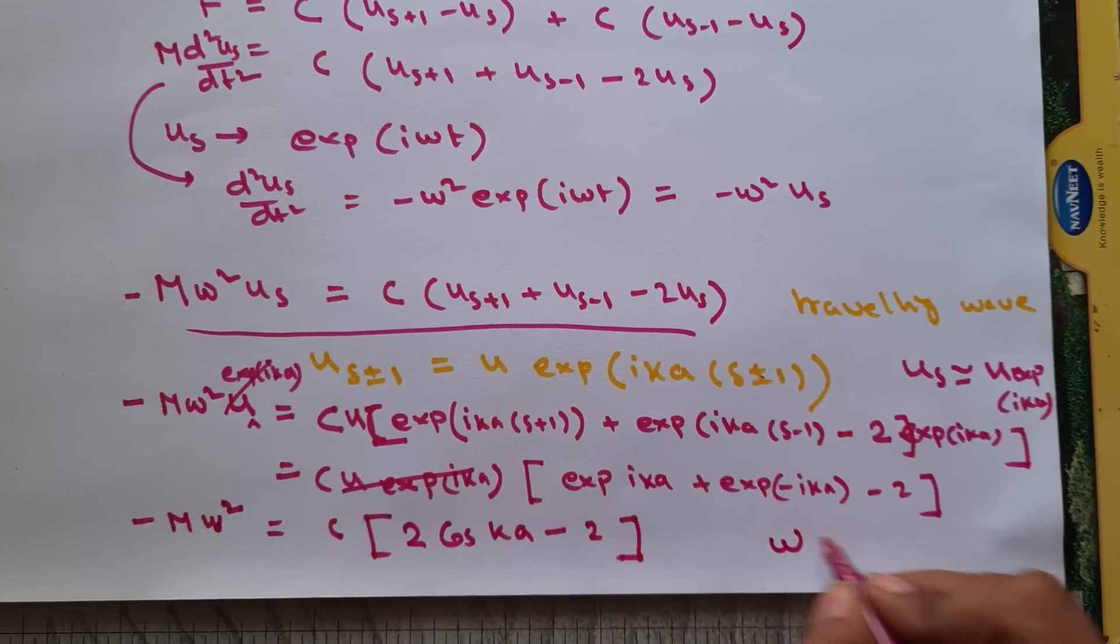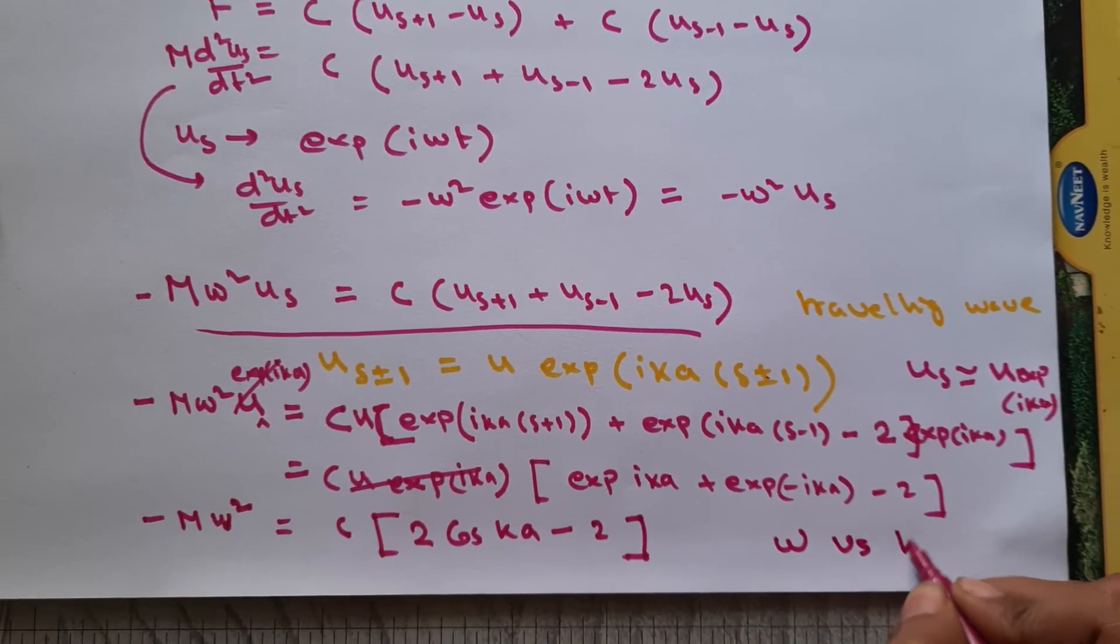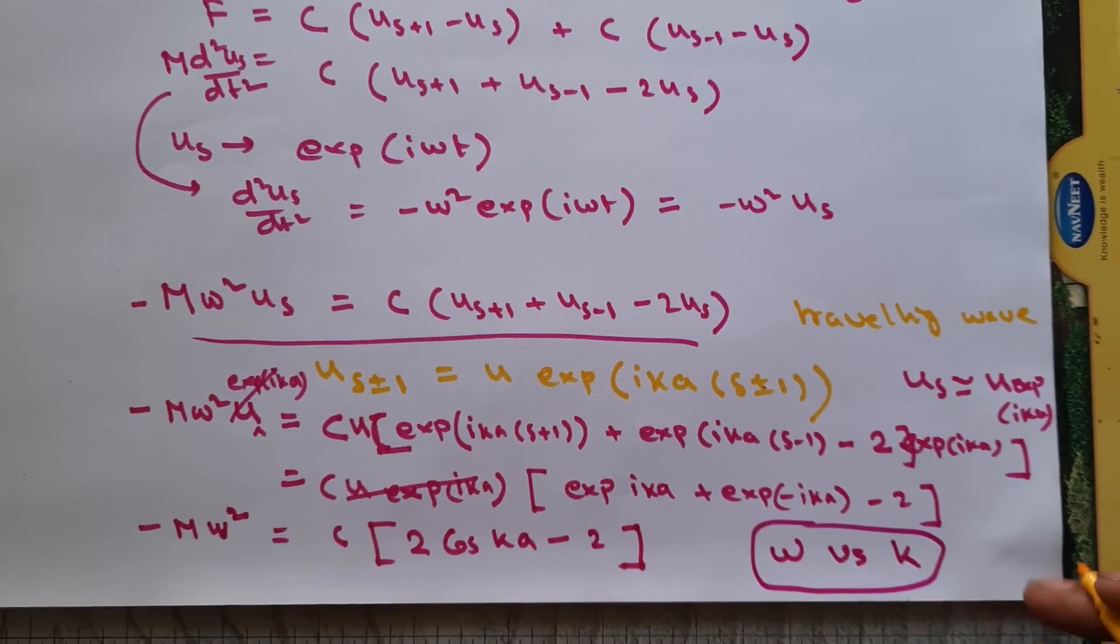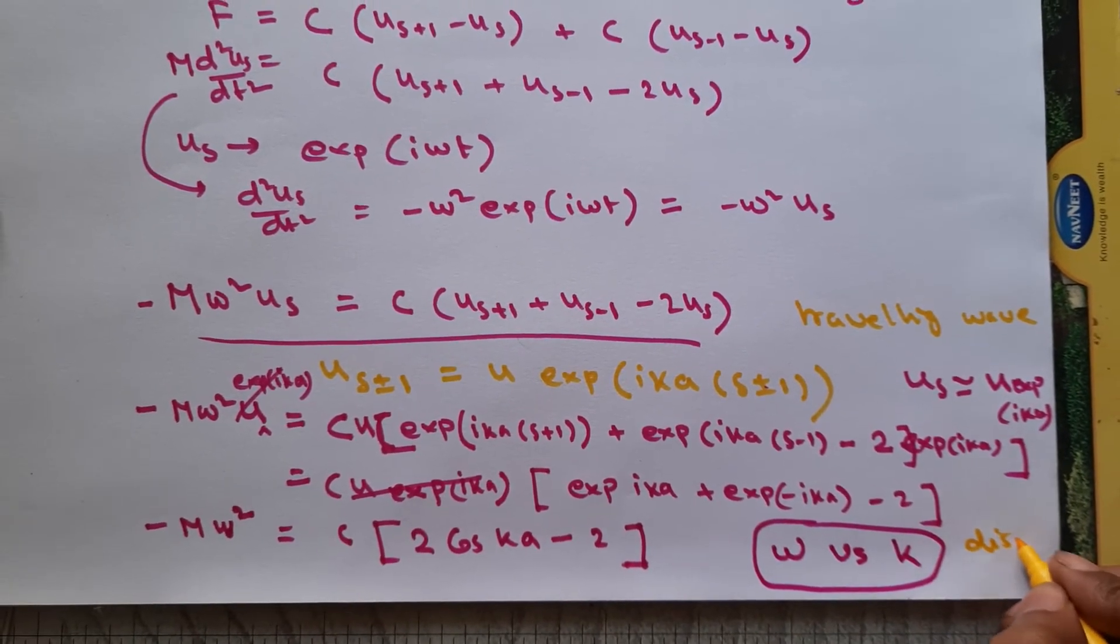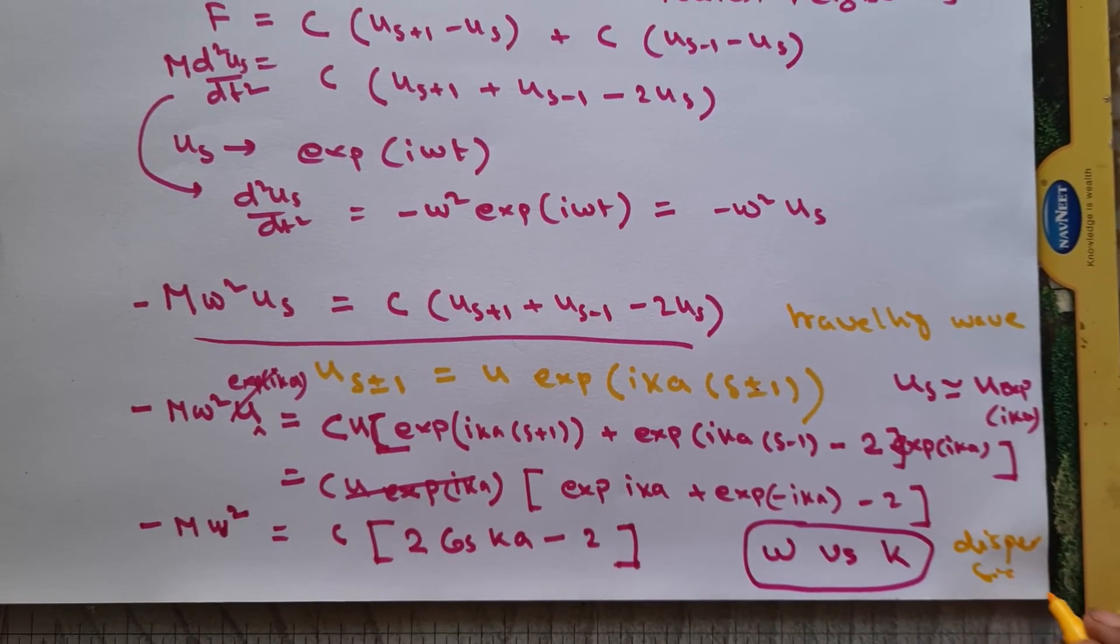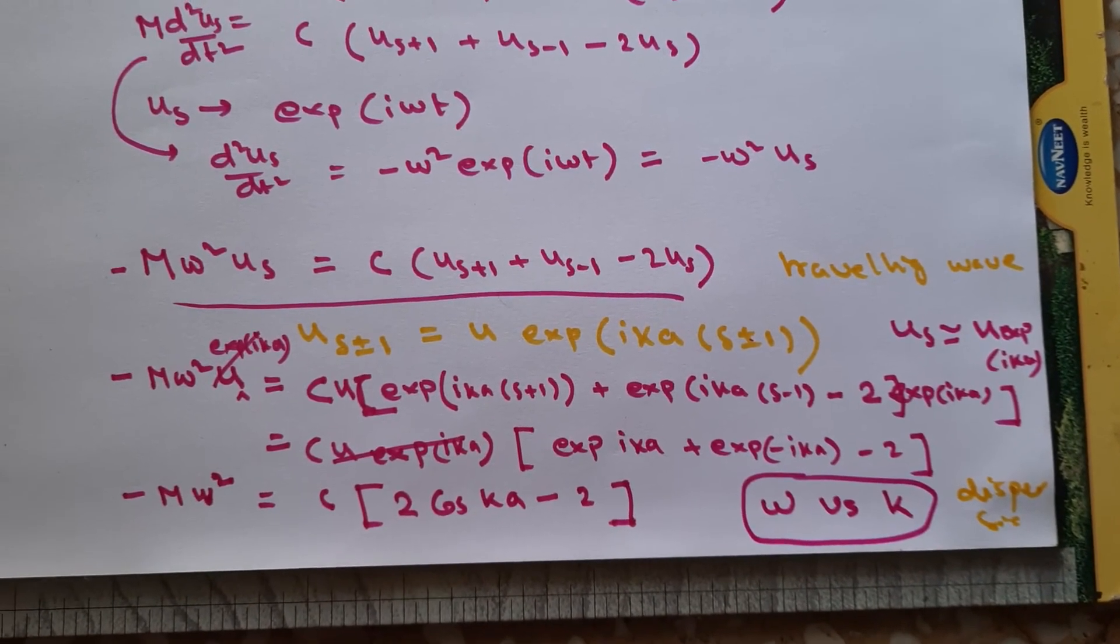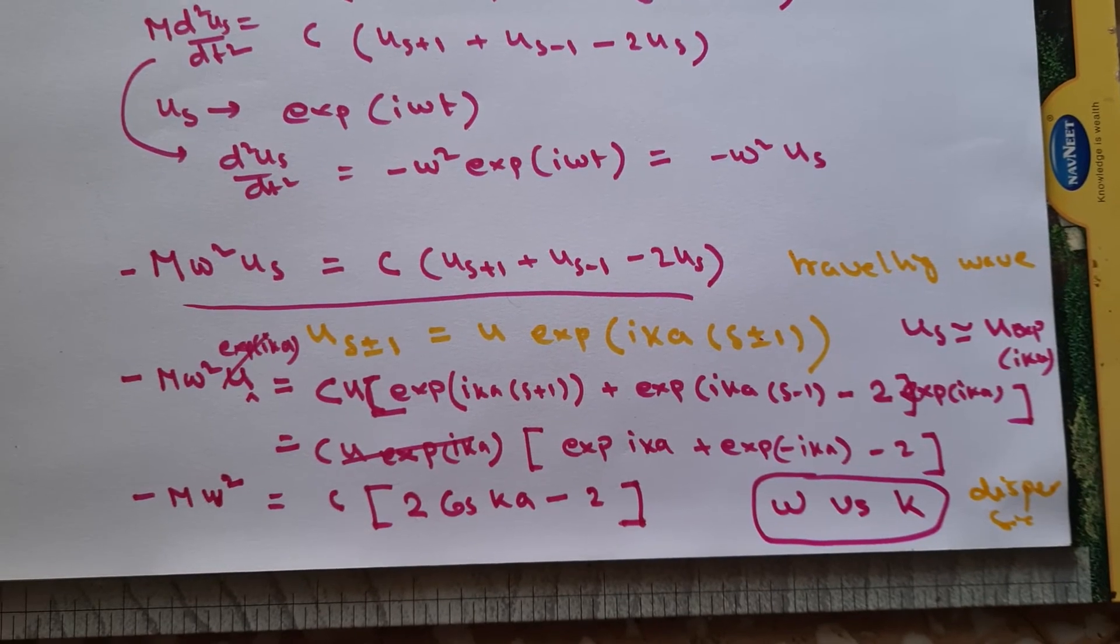So here we have a relation between omega versus k which is nothing but our dispersion relation. So now we know how the wave will propagate.